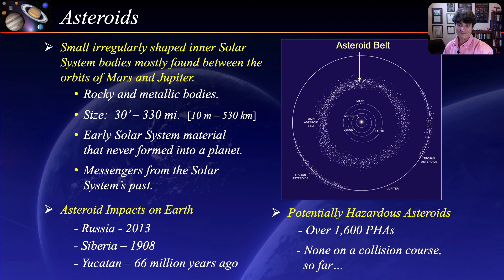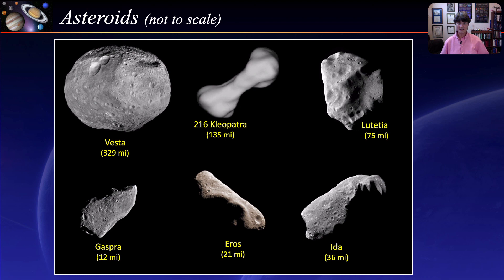Here are a few well-known asteroids. As you can see, most are irregular in shape, except Vesta. They are not to scale. Vesta has a mountain peak at its south pole that is three times the size of Mount Everest — the tallest mountain in the solar system. Also seen here is the Snowman Crater.